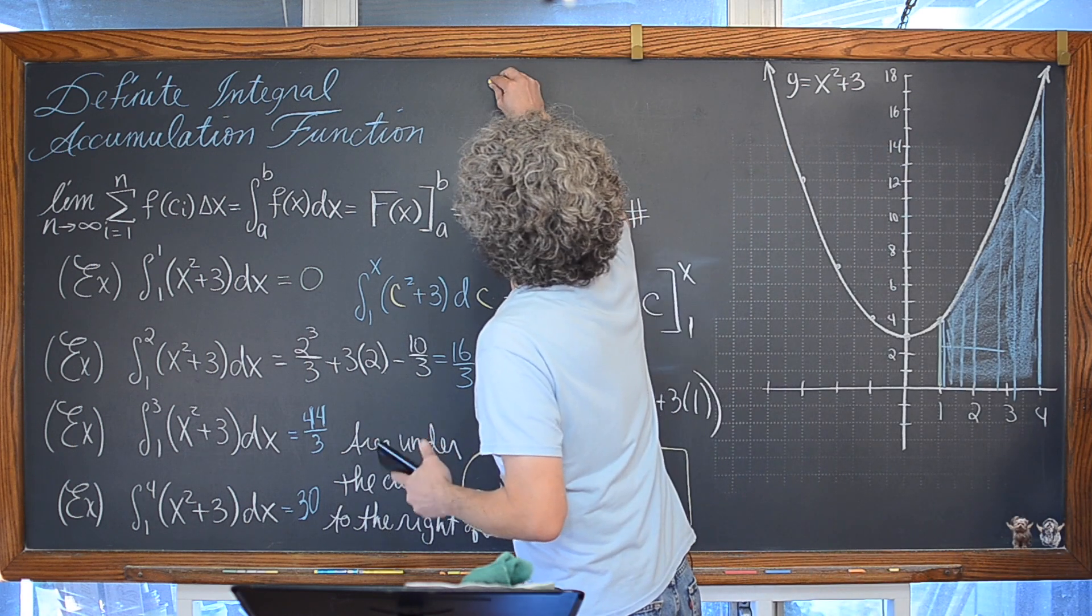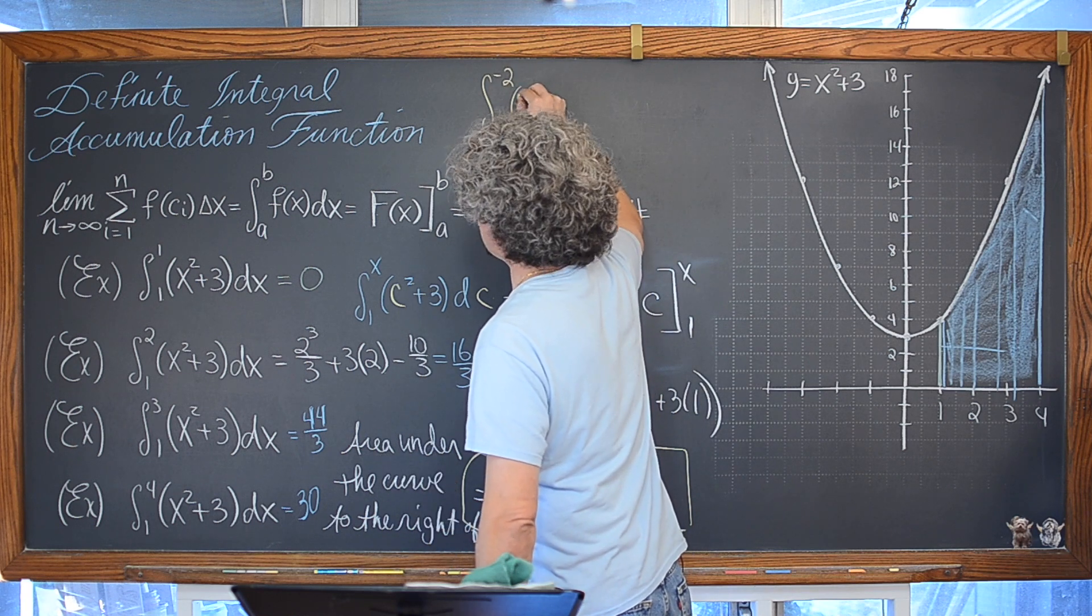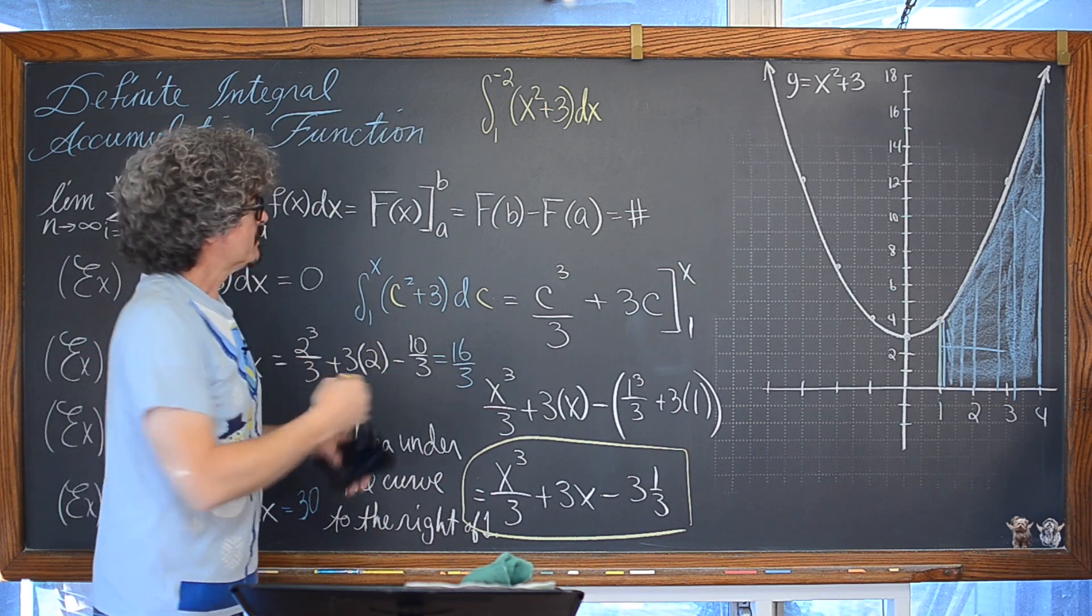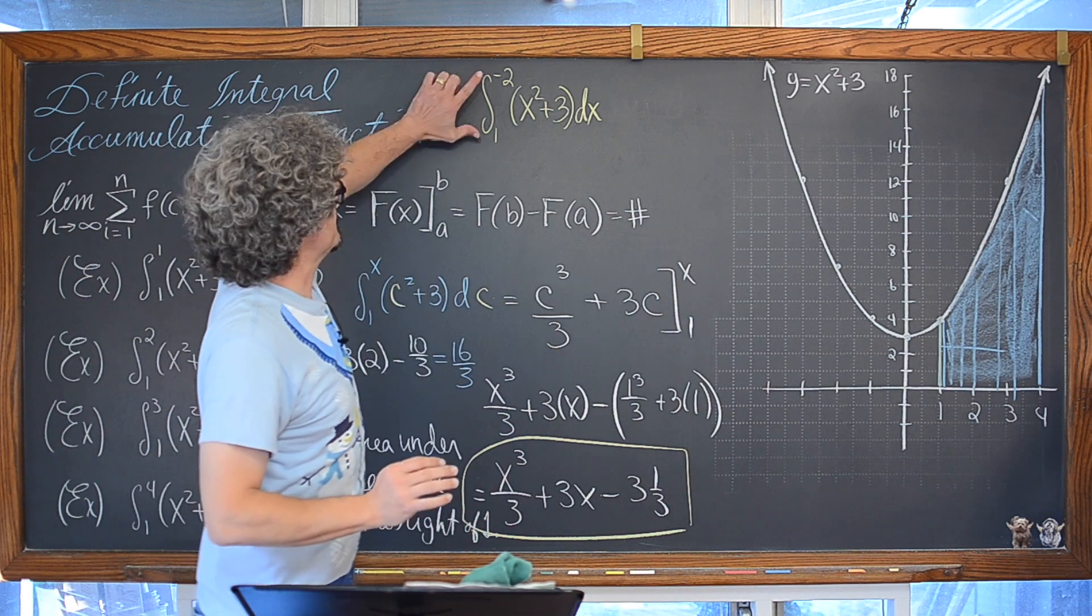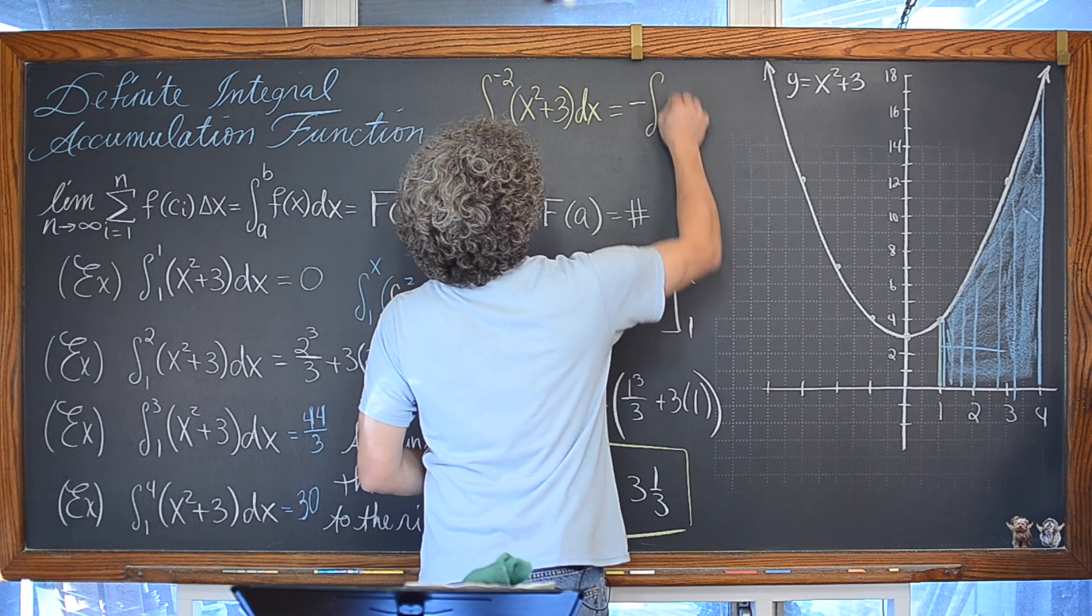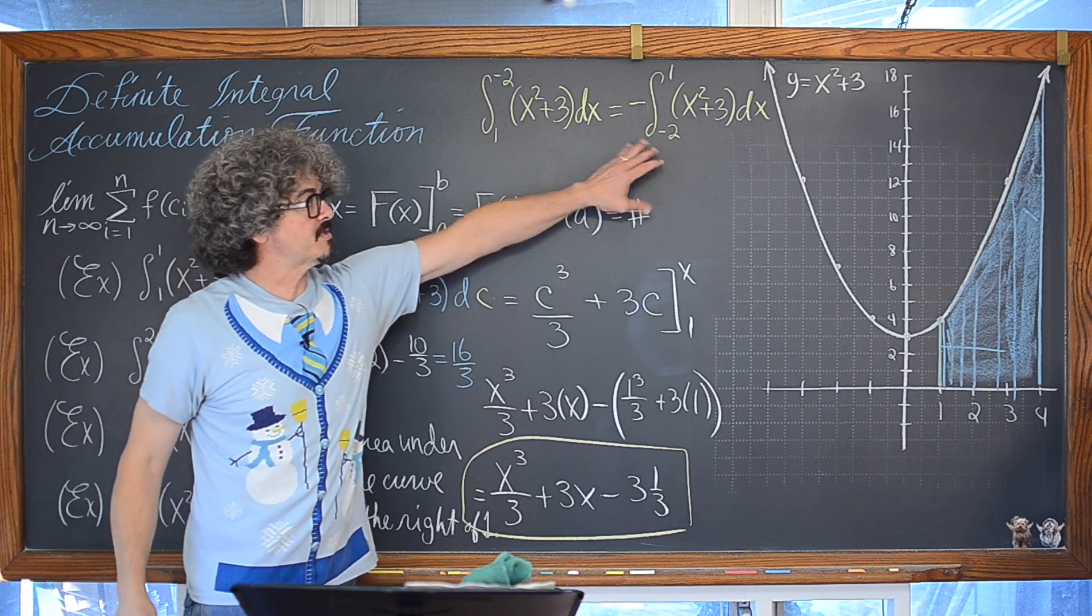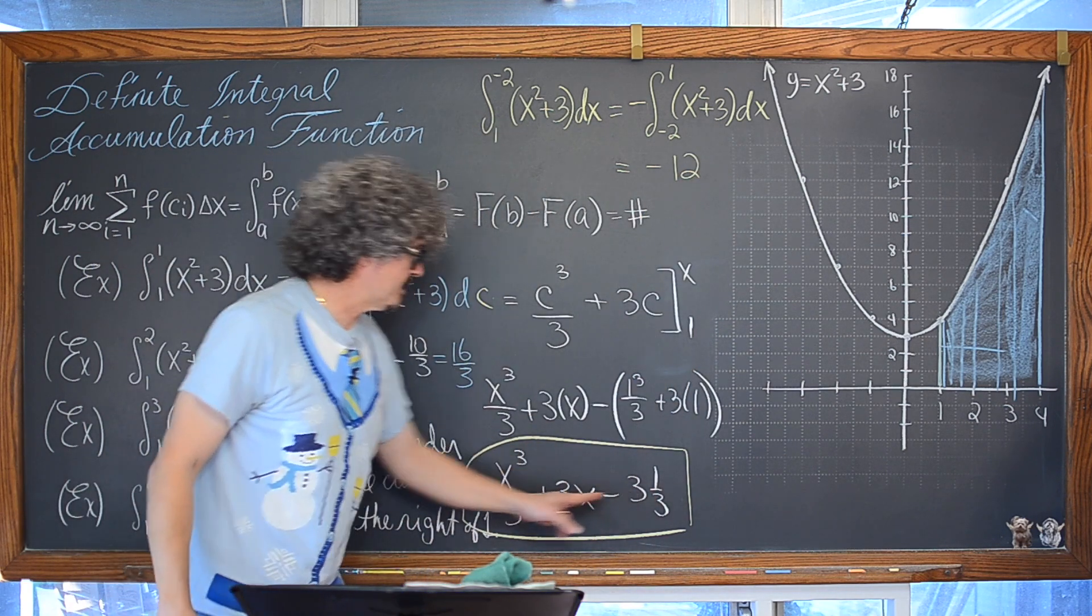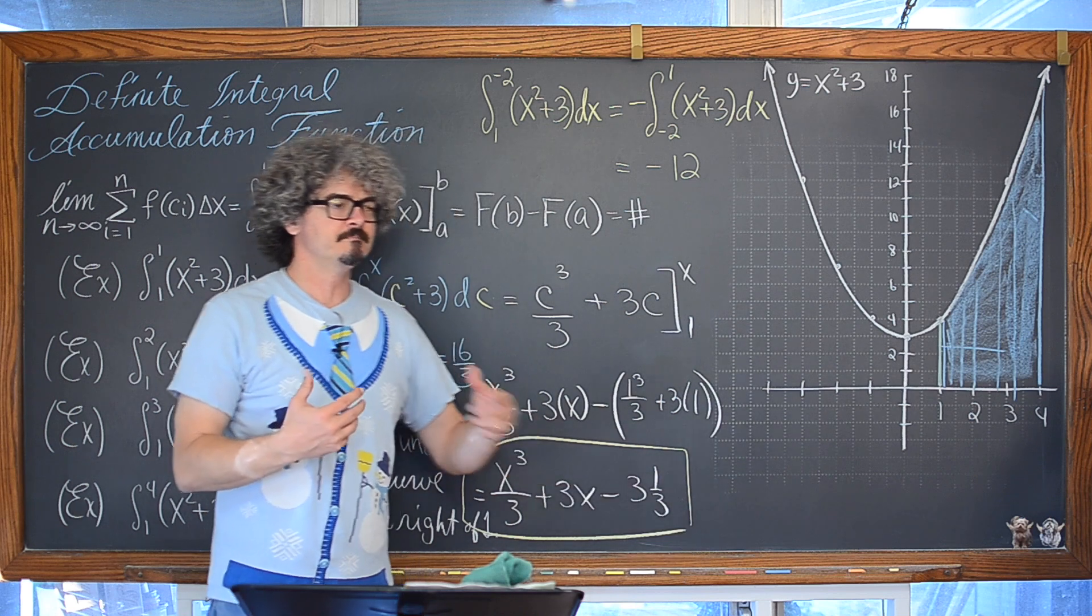But, let's think about that. If we plug in, if we want to find the definite integral from 1 to negative 2 of x squared plus 3 dx, well, the lower limit of a definite integral needs to indeed be the lower limit. So, we would rewrite this using another property of definite integrals, as being the opposite of the definite integral from negative 2 to 1 of x squared plus 3 dx. Now, if you evaluate this definite integral, you're going to get an answer of negative 12. If you plug negative 2 into this expression or this accumulation function, you're going to get an answer of negative 12.